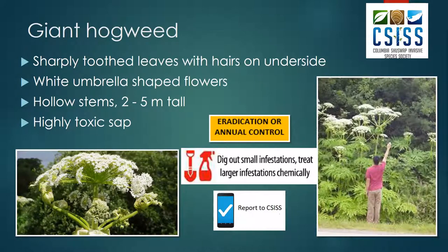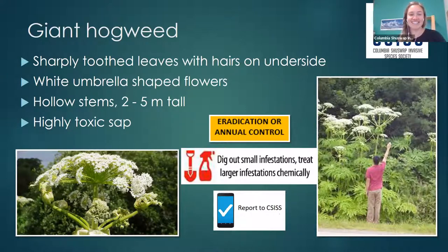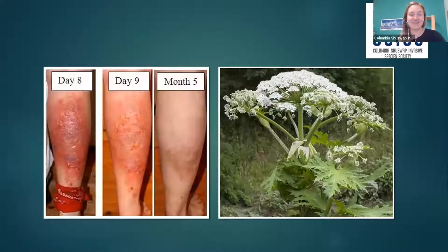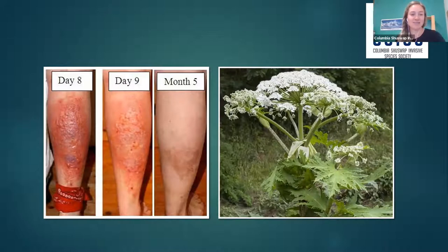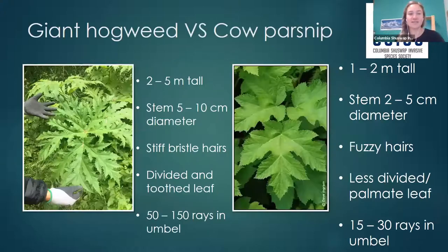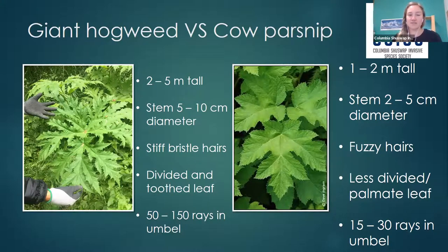Cow parsnip is a native plant that is often confused with giant hogweed. The toxic sap can also cause blindness if you get it around your eyes. It's really important to use caution if you're near it. Cow parsnip doesn't grow quite as big as giant hogweed, and there are some important differences.